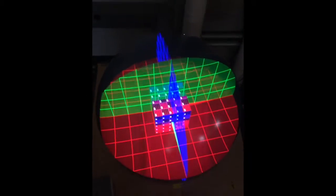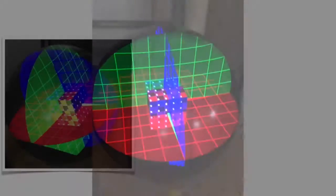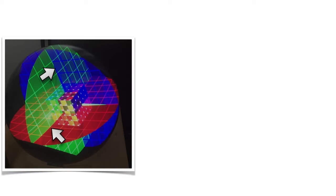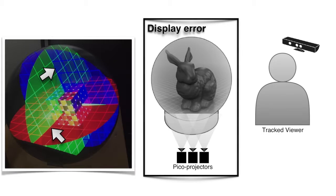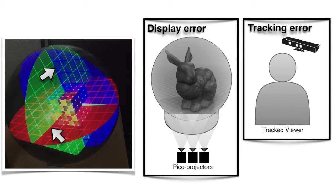However, due to the errors in the system, the image may not be registered correctly based on the viewpoint, causing artifacts like distortions. We perform error analysis of the system in terms of display calibration error and tracking error to determine which component accounts for the most perceptual error.